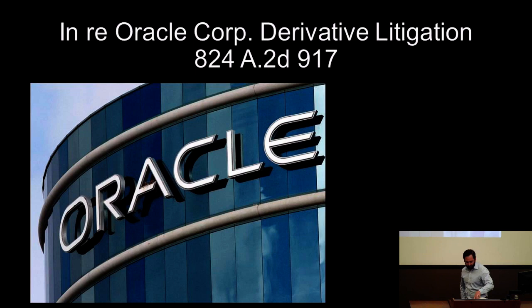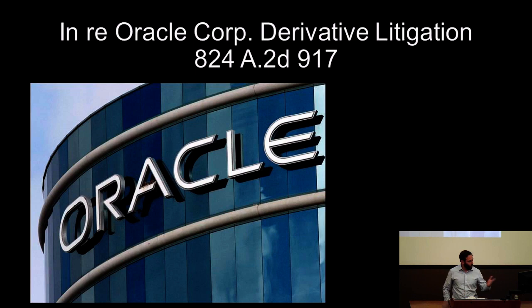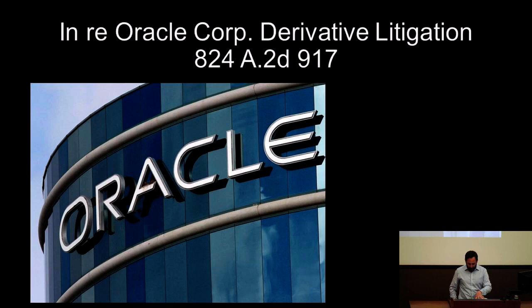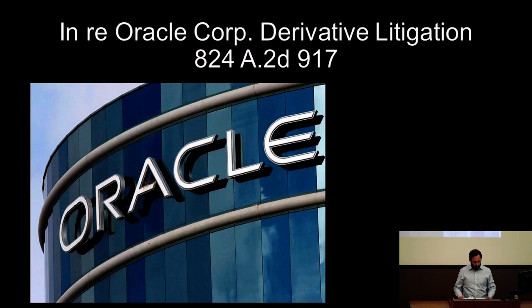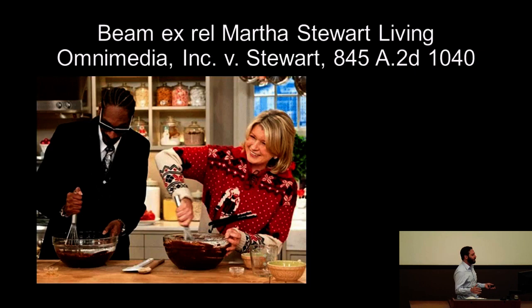This came up in Oracle, an interesting case involving a special litigation committee and a derivative suit. The SLC was comprised of academics from Stanford. The issue was that Oracle Corporation gave a lot of money to Stanford. Even an established chaired professor — who you'd think would be insulated by his permanent position — the court found that going back to the notion that the SLC should be beyond reproach like Caesar's wife, the SLC needed to be comprised of directors who were fundamentally independent. The idea that this person's job was related to a major source of funding at the institution suggested that these members were controlled or beholden to Oracle — and so the SLC's recommendation was not valid.